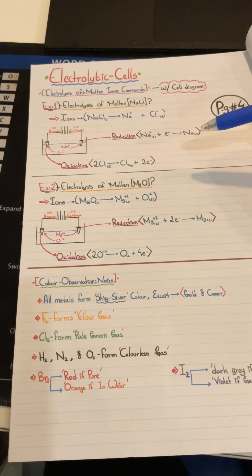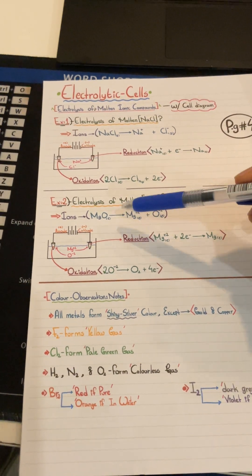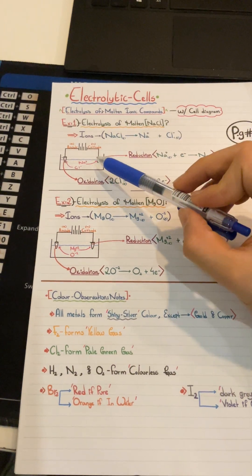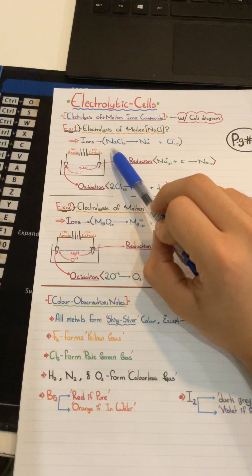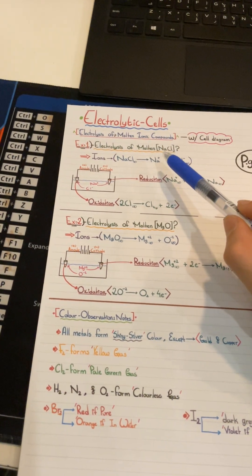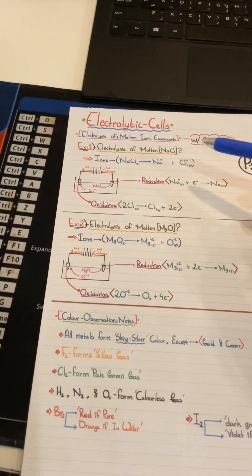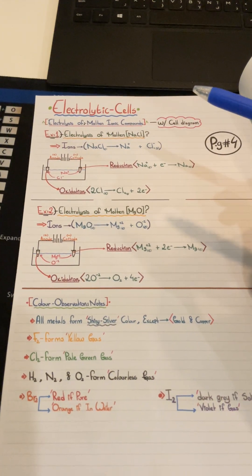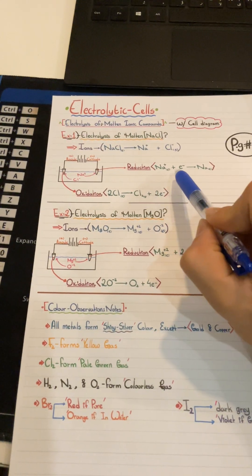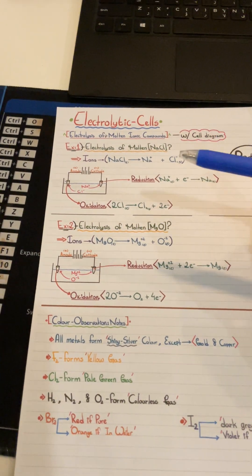Let's go through practice questions. For electrolysis of molten sodium chloride: the decomposition equation shows sodium chloride being electrolyzed into sodium ions and chloride ions. The positive cation is sodium — it goes to the cathode, where reduction occurs. The half equation at the cathode is: Na⁺ + e⁻ → Na.